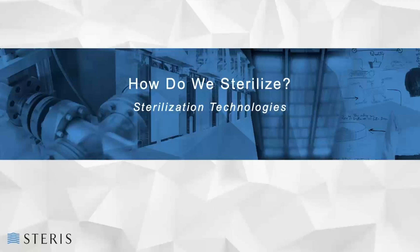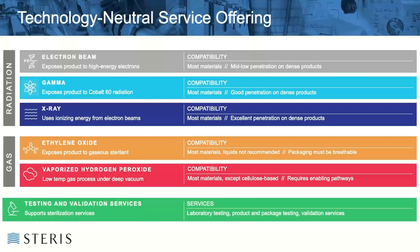Let's now talk about the technologies and how they actually deliver sterility assurance. In this section I'm going to touch on some of the technologies — probably not to as great a depth as we will in future webinars, but really to share some insight about the diversity of technologies available. We at STERIS AST provide what we call a technology neutral service offering. We provide the widest possible portfolio of technology so that in partnership with our customers we can apply that technology which best suits product requirements.